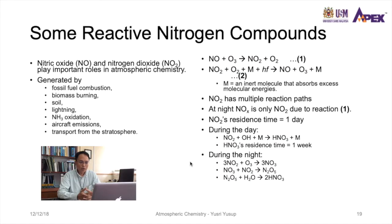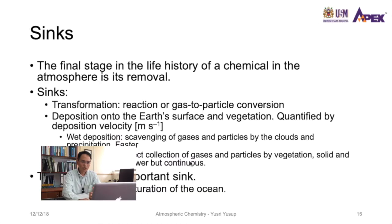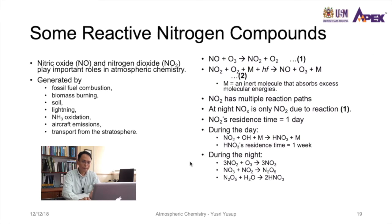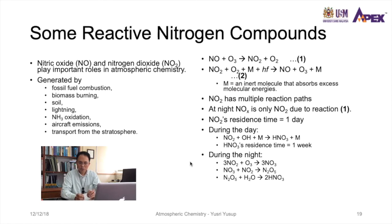Now we go into reactive nitrogen compounds. The main ones in the atmosphere are nitric oxide (NO) and nitrogen dioxide (NO₂), which play very important roles in atmospheric chemistry. NO and NO₂ are emitted by fossil fuel combustion, biomass burning, soil processes, lightning, ammonia oxidation, aircraft emissions, and even transport from the stratosphere.